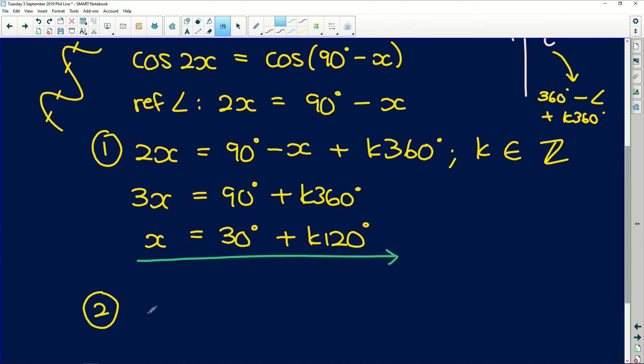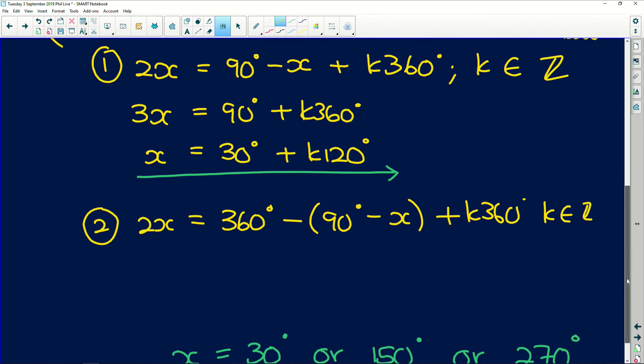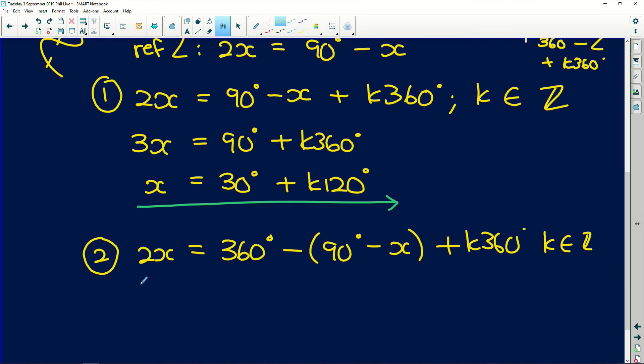The second one. 2x is equal to 360 degrees minus, remember fourth quadrant, 90 degrees minus x plus k360 and k is an element of the integers. Very important. So now we can solve for x. We're going to get here. This is going to become a positive. But if we move it to the other side it will be negative. So we'll have 2x minus x which is just x is equal to 360 degrees minus 90 is 270 degrees plus k360. And that is the second one that we're working with.